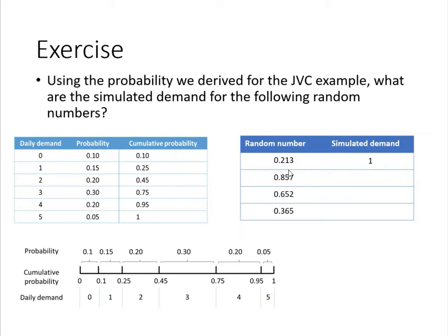Now, let's move on to the next number. 0.857 is in this bucket, so the simulated demand is 4. If you check out this table again, you will find that it's in between those two numbers, those two cumulative demand, and the simulated demand is 4.